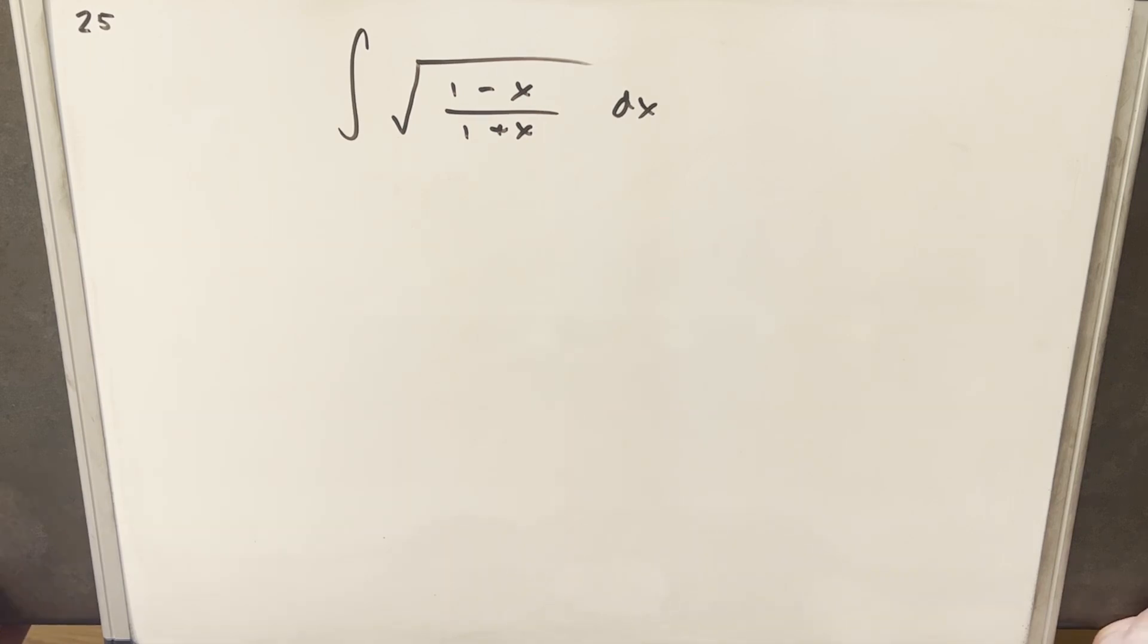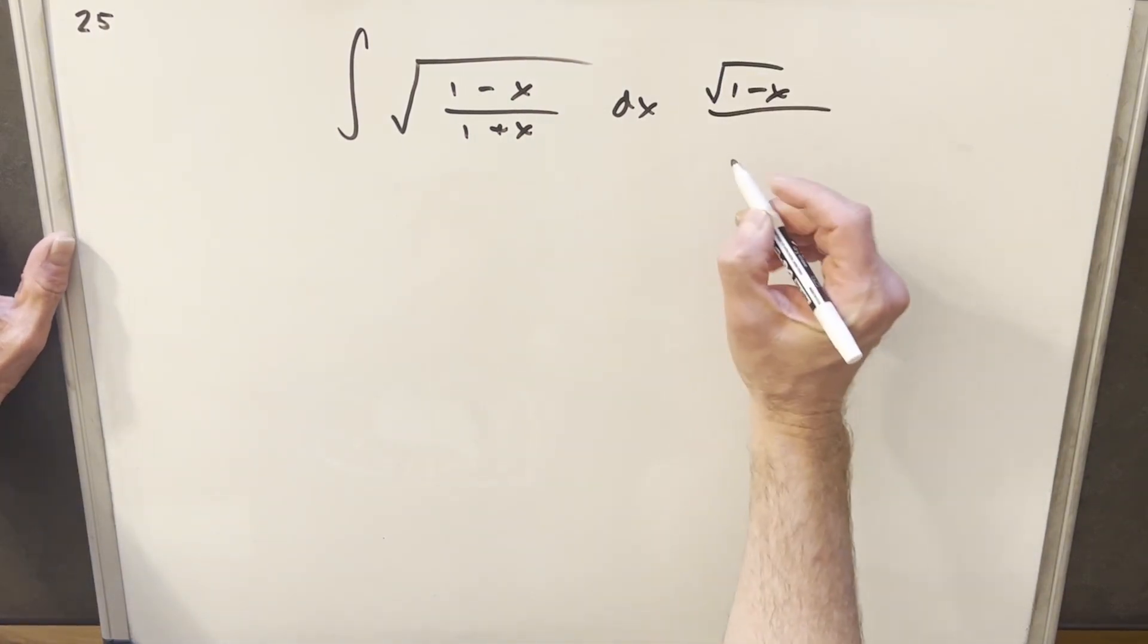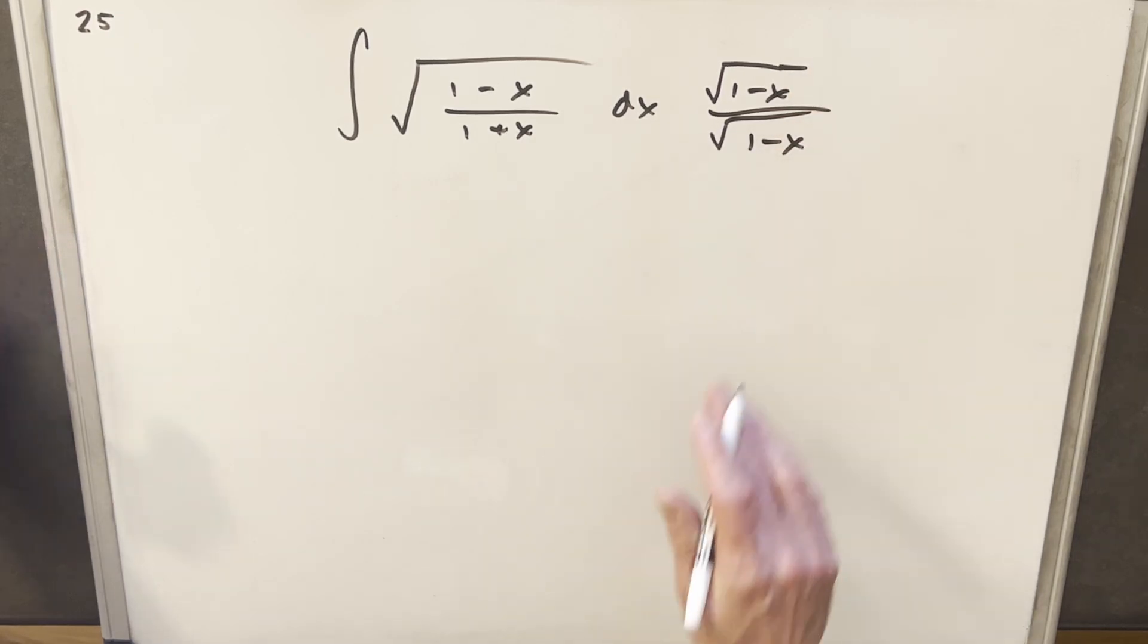Okay, with a problem like this, there's a very standard way to approach it. We just multiply by the conjugate. So what I'm going to do is multiply square root of 1 minus x times square root of 1 minus x top and bottom.